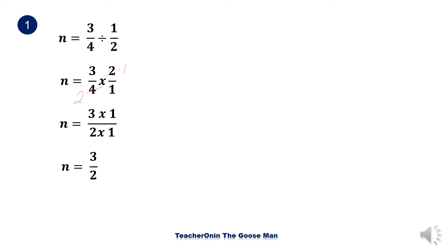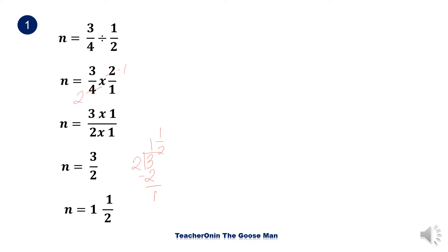I'll convert three over two to a mixed number. I'll divide three by two. How many twos can we get in three? There's only one. One times two gives us two. Then subtract — the difference is our numerator and the divisor is our denominator. So three over two is the same as one and one half.